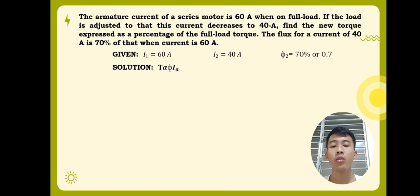Proceeding to the solution, we will take advantage of the relationship between torque, flux, and armature current, which states that torque is directly proportional to the flux times the armature current. Knowing this, I'm going to assume that T1 is equal to flux 1 times the armature current 1, and T2 is equal to flux 2 times the armature current 2.